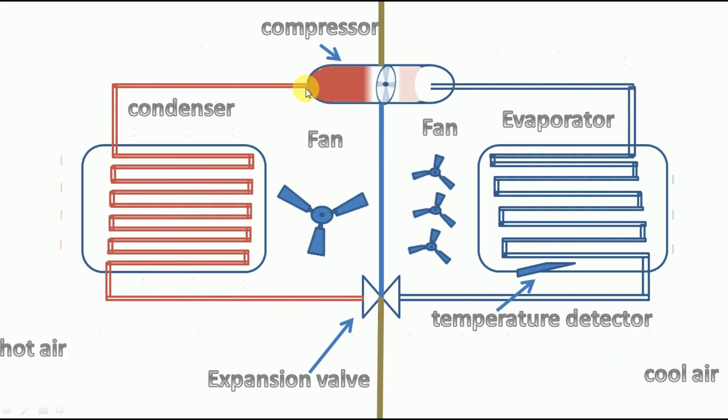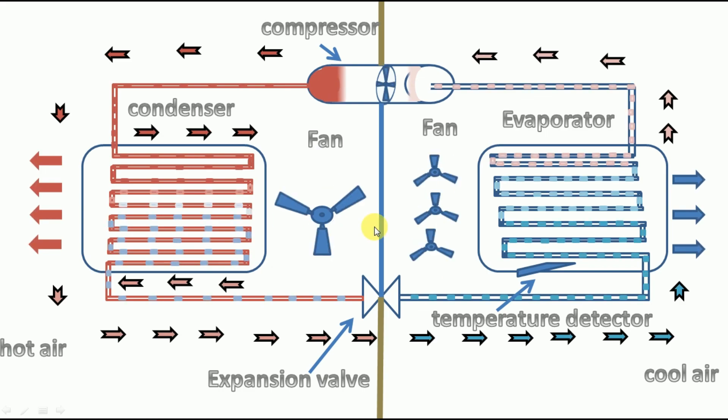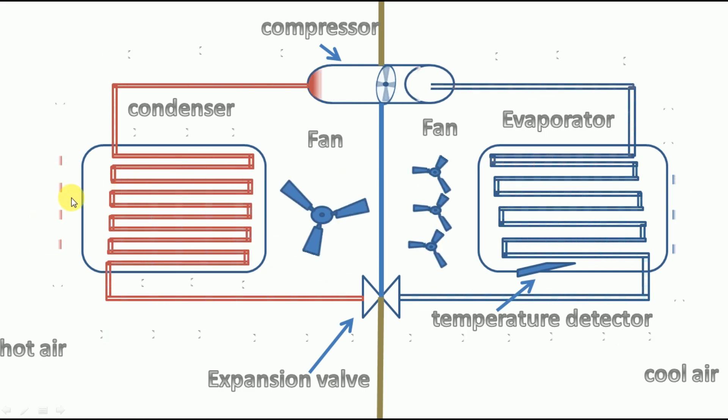Step 3. The hot liquid is forced to pass through condenser where the high speed fan is blown out to transfer the heat on the liquid to atmosphere. The compressor and the condenser are located outside the room.